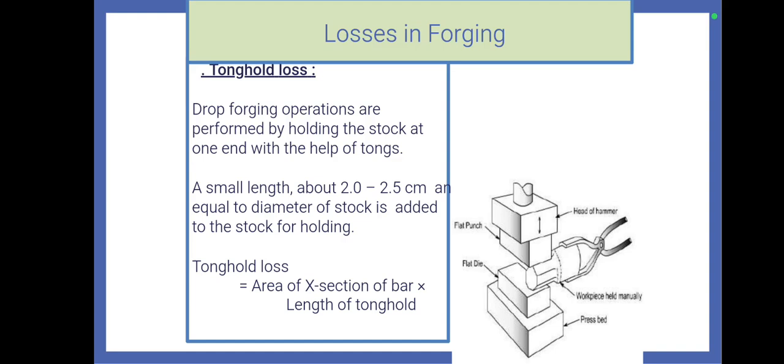Therefore, this tongue hole loss should be added while calculating the required stock material. The tongue hole loss is equal to area of cross section of bar times length of the tongue hole. Length of the tongue hole is generally taken as around 2 to 2.5 cm of the stock length.